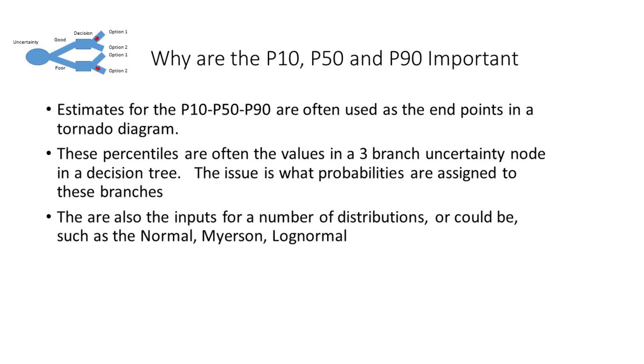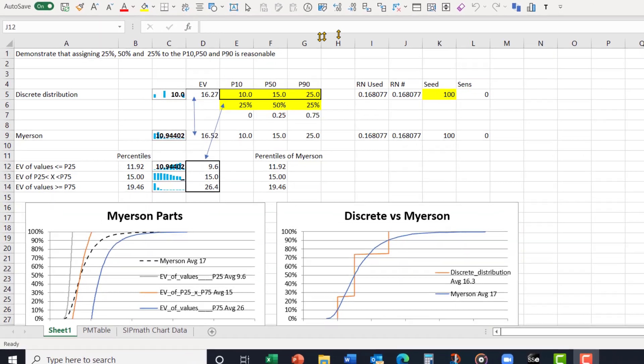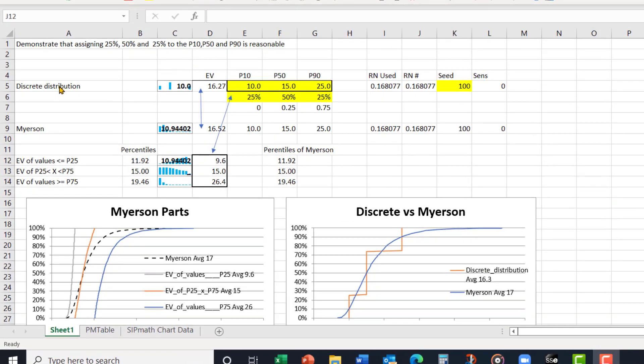Let's go look at an example model and see what we can learn. Okay, here is the model. Let me explain what's in here. First of all, I've defined the discrete distribution with values of 10, 15, and 25 for P10, P50, P90. And you'll notice it's a non-symmetric distribution.